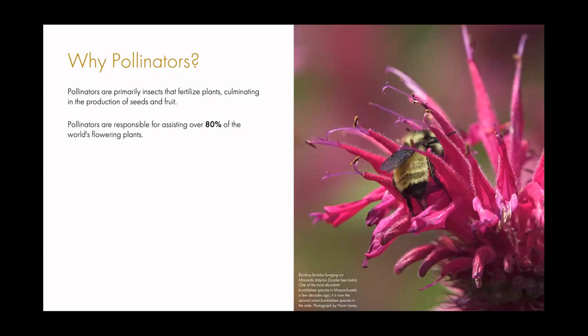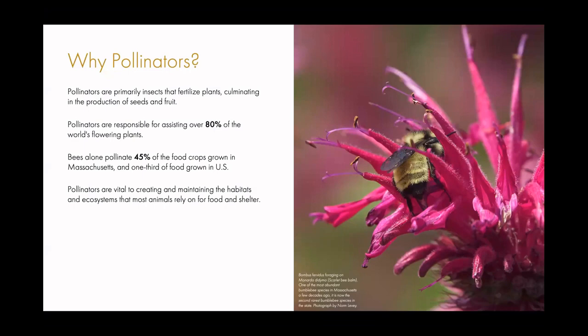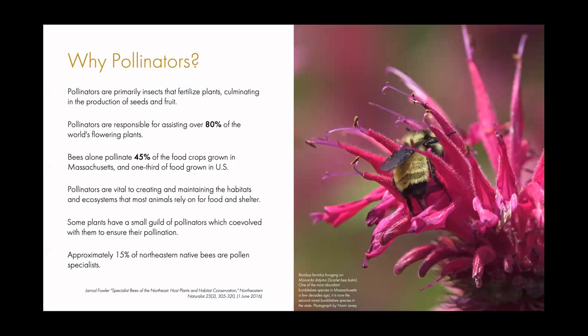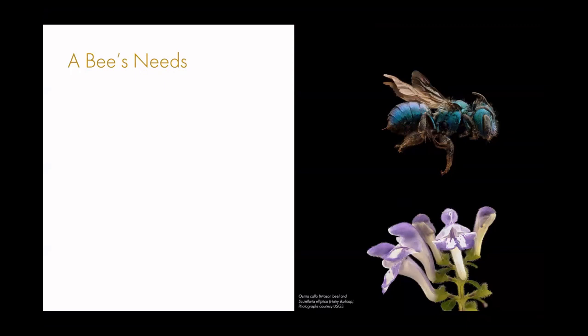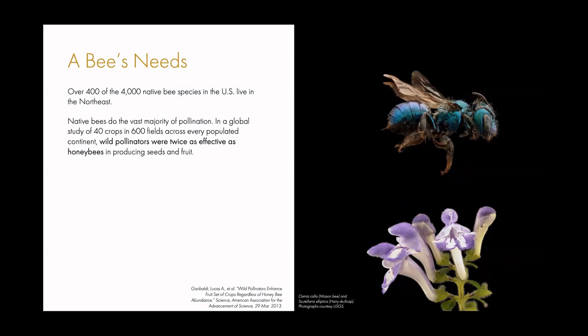Why are pollinators so important? They are primarily insects in the northeast that fertilize plants, producing seeds and fruit, and assist over 80 percent of the world's flowering plants. Bees alone pollinate nearly half of the food crops growing in Massachusetts and one-third of the food grown in the United States. Some plants rely upon particular genus, families, or even species of pollinators to ensure their pollination. In the northeast, approximately 15 percent of native bees are pollen specialists at the family or genus level. There are approximately 4,000 native bee species in the U.S., with nearly 400 living in the northeast.